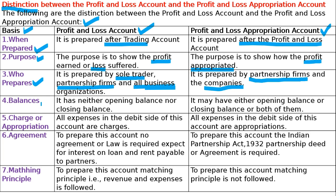Regarding balances: the profit and loss account has neither opening balance nor closing balance. But the appropriation account may have either an opening balance or a closing balance, or both. Regarding the debit side: all expenses on the debit side of the profit and loss account are charges, whereas all items on the debit side of the profit and loss appropriation account are appropriations.